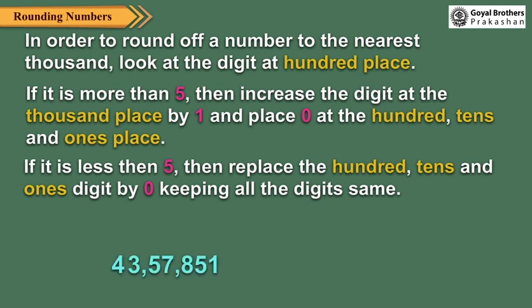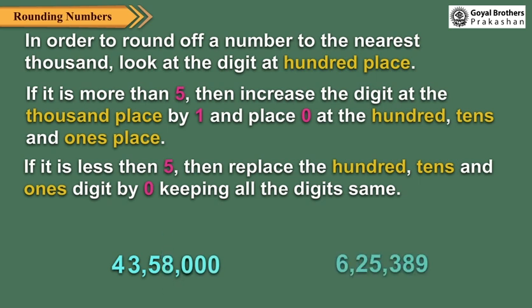Let us see some examples. Here, eight is greater than five. So we replace the hundreds, tens and ones place by zero and increase the thousands digit by one. Here, three is less than five. So we replace the hundreds, tens and ones digit by zero, keeping all the digits the same.